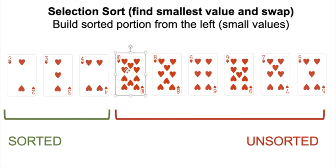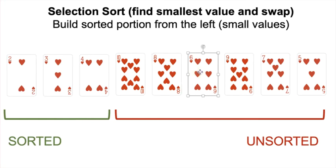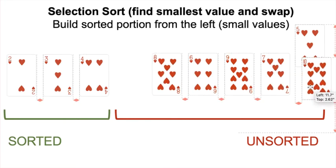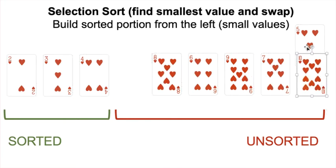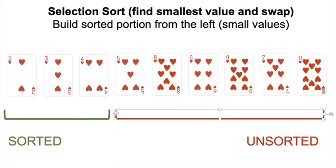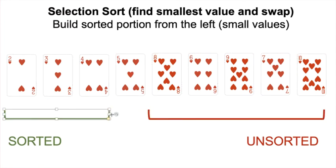Fourth iteration: assume 10 is our smallest. 8 smaller than 10? Yes. 6 smaller than 8? Yes. 9 smaller than 6? No. 7 smaller than 6? No. 5 smaller than 6? Yes — 5 is our new smallest, and it's the last element in the unsorted portion. We swap 5 and 10, shrinking the unsorted by 1 and growing the sorted by 1.